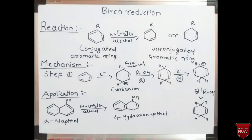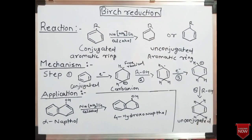Now we will see the applications of the Birch reduction reaction. One of the main applications is that alpha-naphthol is converted into 4-hydroxyl naphthol. The 4-hydroxyl naphthol is mainly used in many pharmaceutical industries for the preparation of several drugs and chemical compounds.